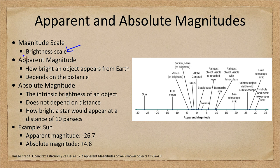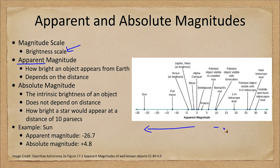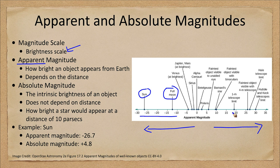We use both apparent and absolute magnitudes. The apparent magnitude is how bright an object appears from Earth. As we see in the diagram here, brighter objects are on the left and fainter objects on the right. Very bright objects like the Sun or the full moon would have the smallest apparent magnitudes, while very faint objects seen only with large telescopes would have larger apparent magnitudes.